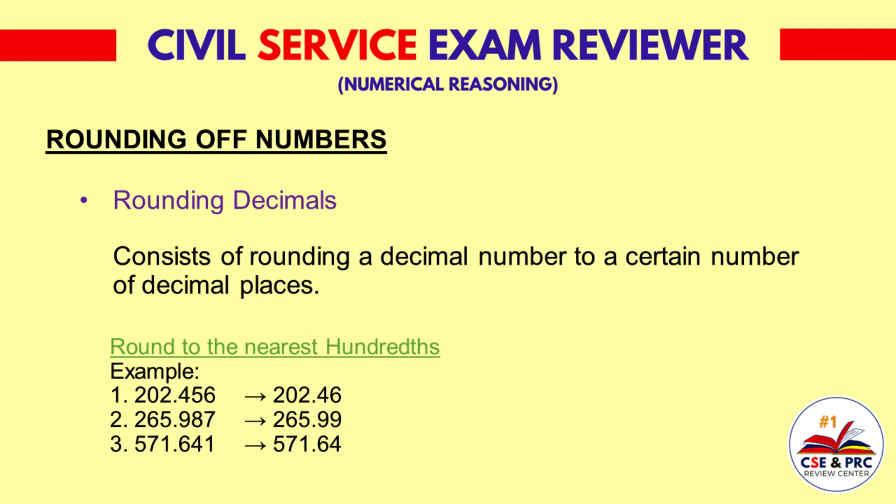Round to the nearest hundredths. Example 1: 202.456 — the result will be 202.46. Example 2: 265.987 — the result will be 265.99. Example 3: 571.64 — the result will be 571.64.